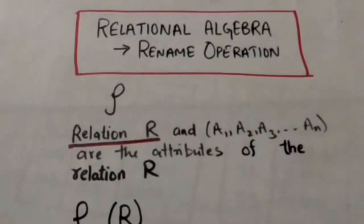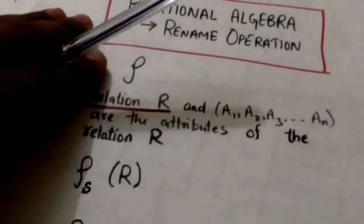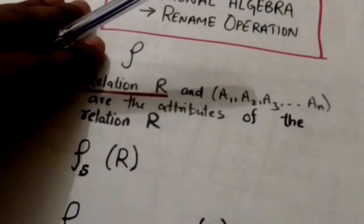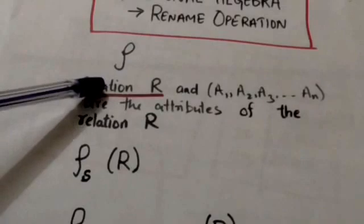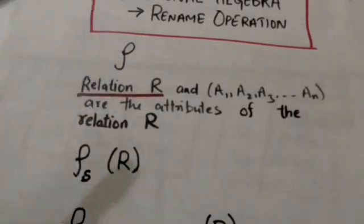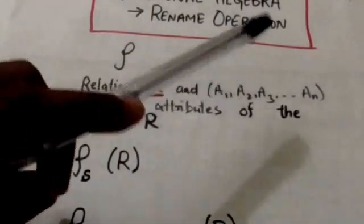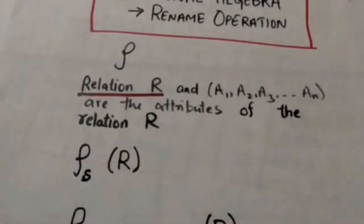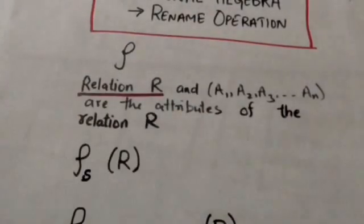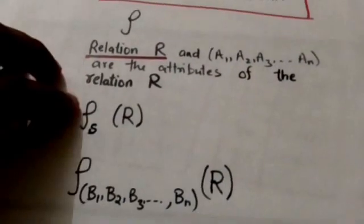Suppose there is a relation R, and a1, a2, a3 up to an are the attributes of relation R in this order. Then consider this expression.